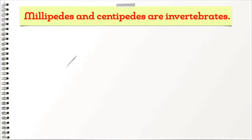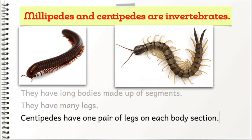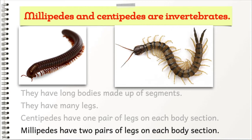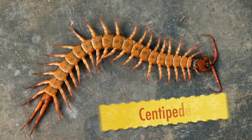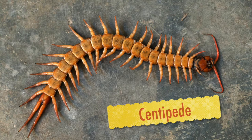Millipedes and centipedes are invertebrates. They have long bodies made up of segments and they have many legs. Centipedes have one pair of legs on each body section, while millipedes have two pairs of legs on each body section.